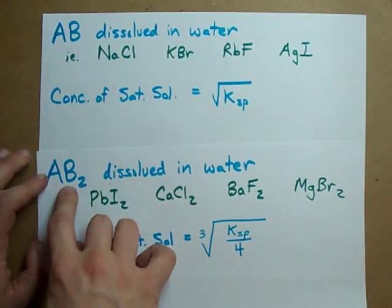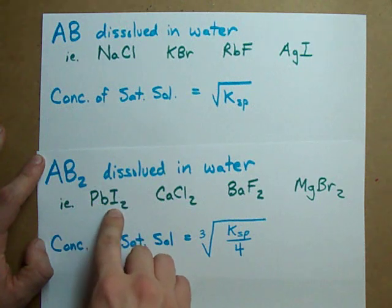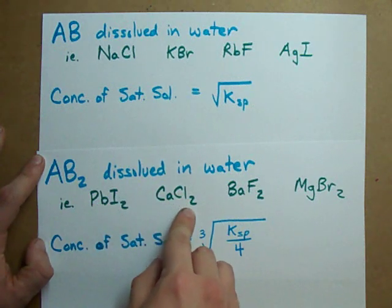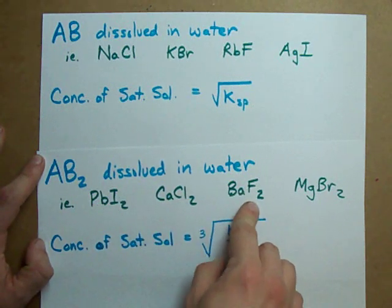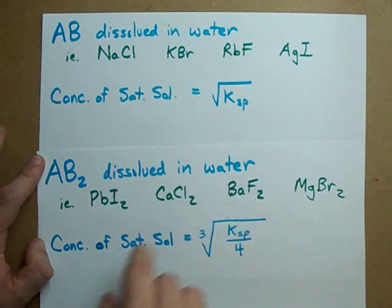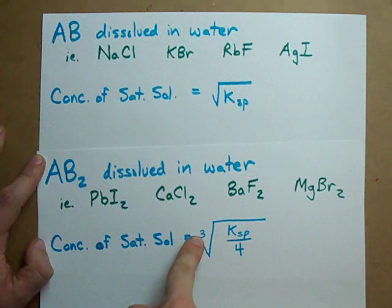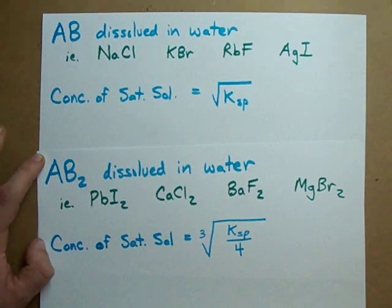If you've got a solution of AB2, so that's like PbI2, CaCl2, BaF2 - see they all have a little 2 at the end - then the concentration at saturation is the cubed root of your KSP divided by 4.